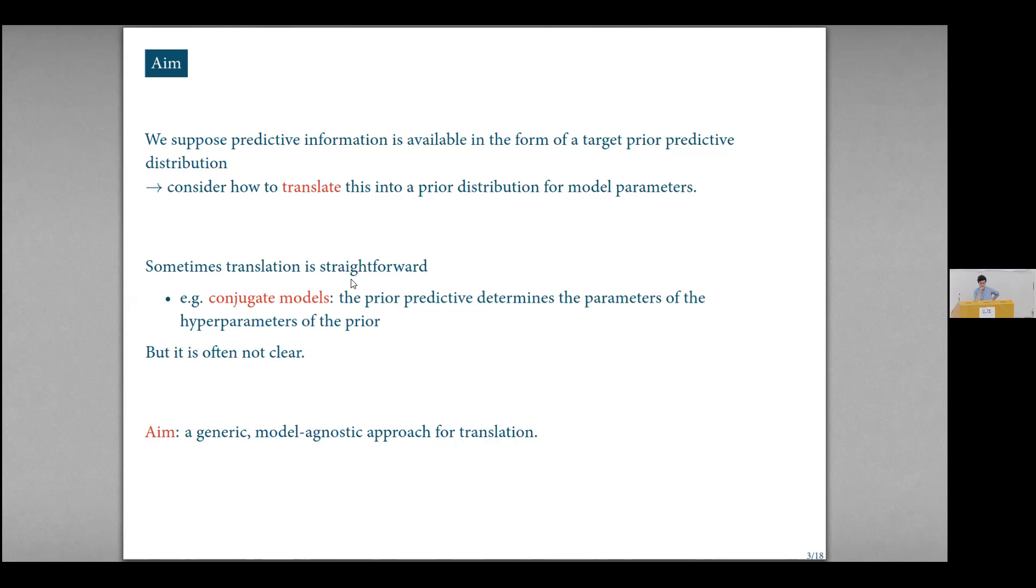So what we're going to do is suppose that we have predictive information available in the form of a target prior predictive distribution, and what we want to think about is how do we translate that back into a prior distribution for the model parameters. Some of you will realize that in some cases it's really obvious. In conjugate models, the prior predictive distribution directly determines the hyperparameters of the prior. And there's also some other special cases like linear models where people have worked out how to do this analytically, but beyond that, it's not obvious how you do this in general.